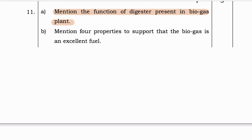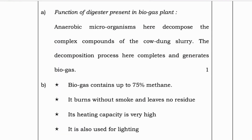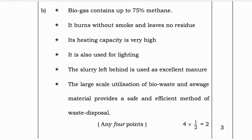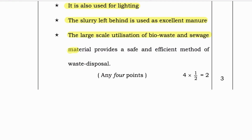Next question: Mention the function of the digester present in a biogas plant and mention four properties to support that biogas is an excellent fuel. Function of the digester: anaerobic microorganisms decompose the complex components of cow dung slurry, completing the decomposition process and generating biogas. Reasons biogas is an excellent fuel: it contains up to 75% methane, burns without smoke and leaves no residue, has very high heating capacity, and is used for lighting. The slurry left behind is used as excellent manure.